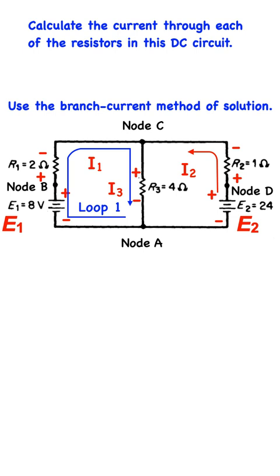Remember Kirchhoff's voltage law tells us that the algebraic sum of changes in potential around any closed loop or path must be zero. Starting at node A, voltage source E1 raises the potential to 8 volts. Therefore, plus 8 and the resistor voltage changes is minus 2I1 for resistor 1 and minus 4I3 for resistor R3. These voltage changes, when added together, must equal zero. So, we write that in a form of an equation, as you see here. The currents are the unknowns.